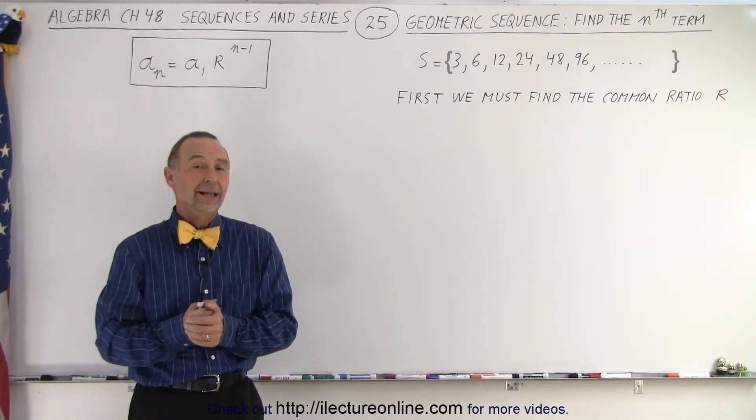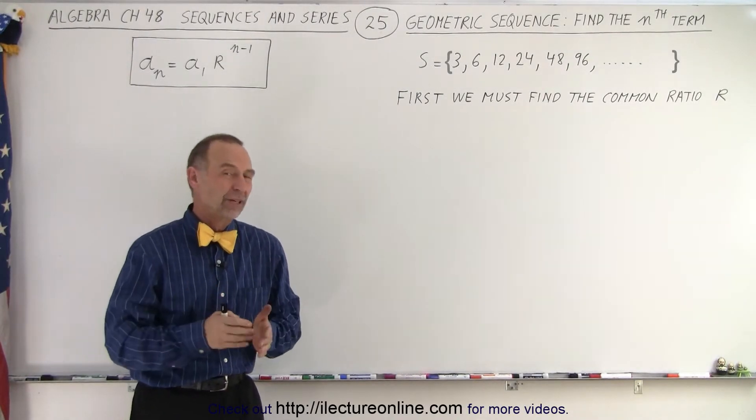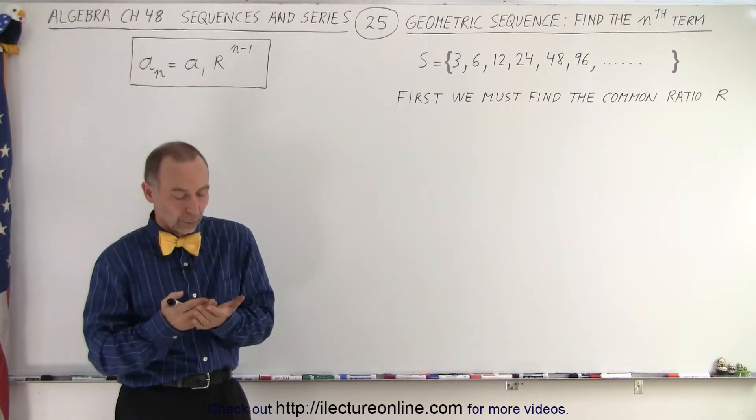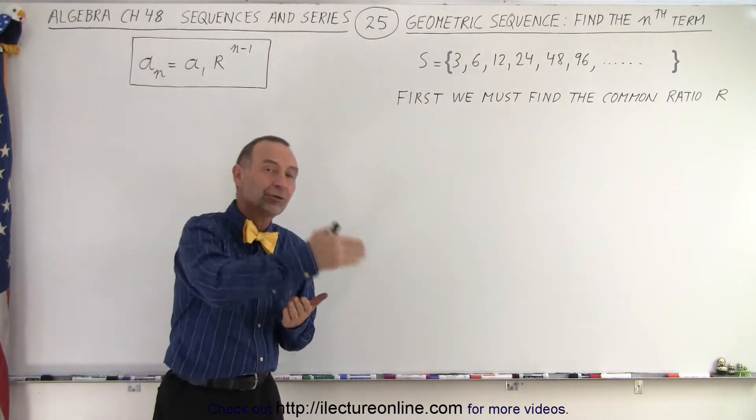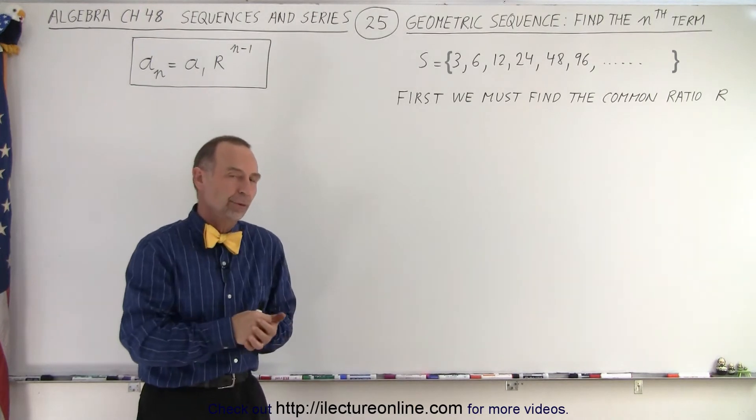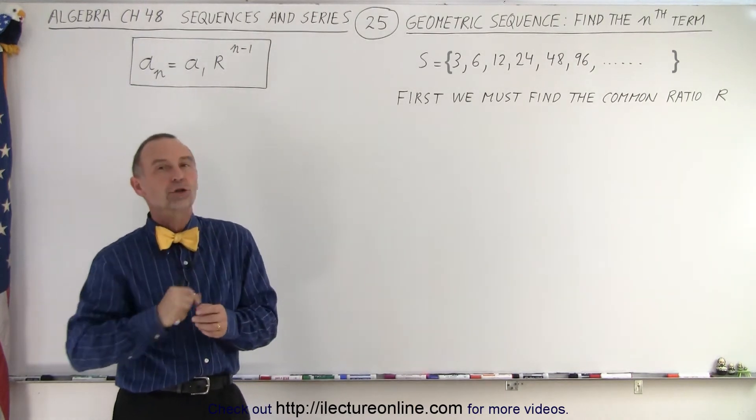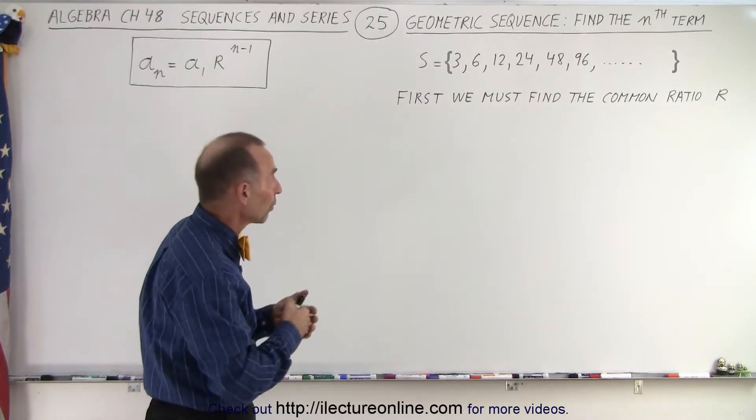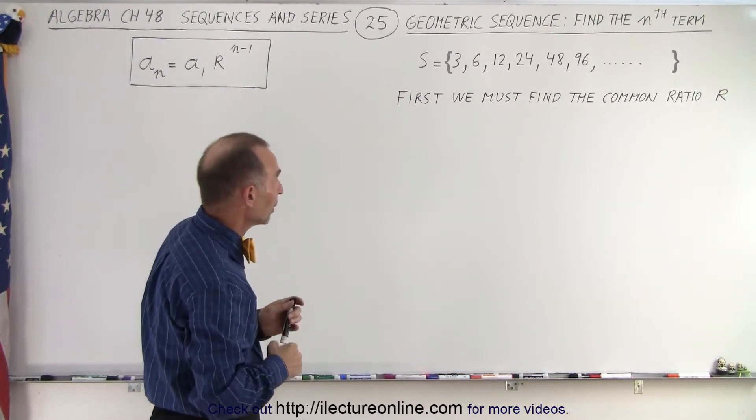Welcome to our lecture online. Now let's move on to geometric sequences. A geometric sequence is where every consecutive term is a fixed number times the previous term. That fixed number is called the common ratio.